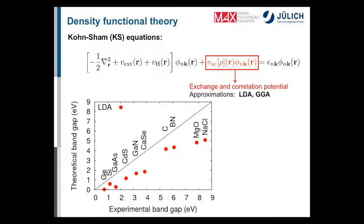Quantitatively, there are certainly discrepancies. For the standard LDA functional, a number of band gaps for simple semiconductors and insulators are shown: the theoretical band gap plotted against the experimental band gap reveals that LDA grossly underestimates the band gap. An exact theory would place all points on the diagonal. Using the GW approximation to correct the band gap brings the results — shown as green points — much closer to that ideal line.